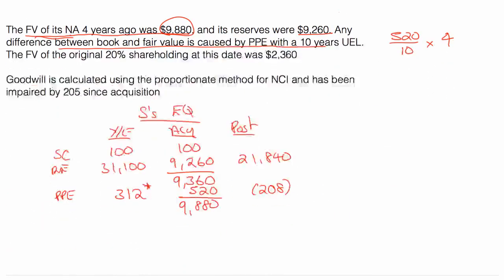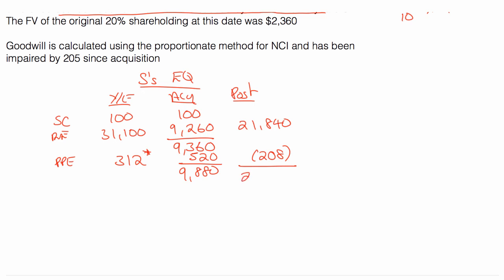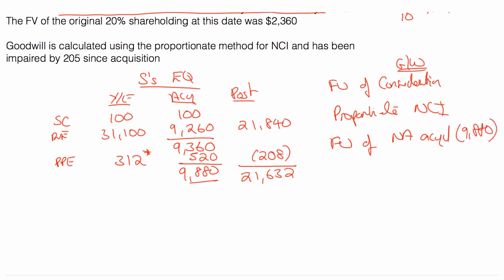And 520 minus 208 would give me 312. And that's what I go put to S's PPE. So plus 312 up there. I can now add that down to 21,632. And I'm ready to go with my goodwill. It's a step acquisition. So I know the fair value of consideration is going to be a bit of a pain in the bump, but I don't mind. It's proportionate NCI according to the question. And then I want the fair value of net assets acquired. And the fair value of net assets acquired, I know, I've just dealt with it, is the 9880.